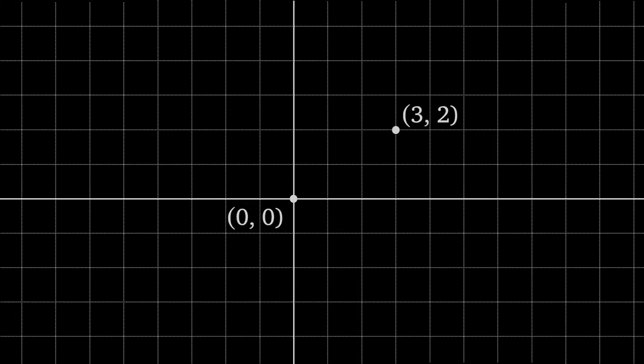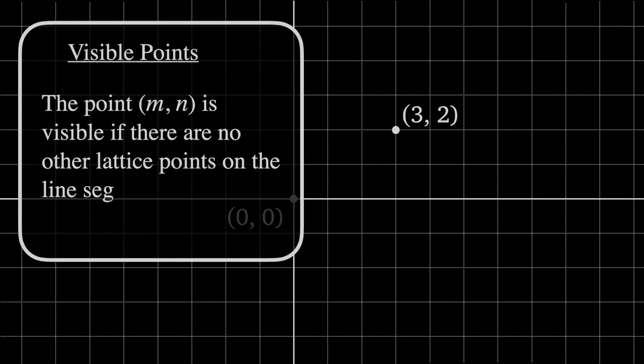Before we start though, I want to introduce visible points on the integer lattice. We say that the point (M,N) is visible if there are no other lattice points on the line segment connecting (0,0) and (M,N).